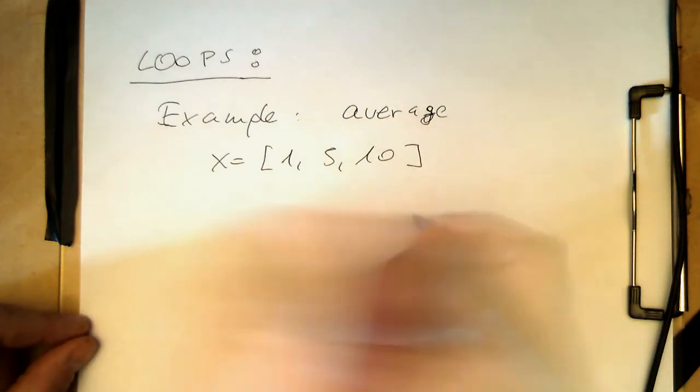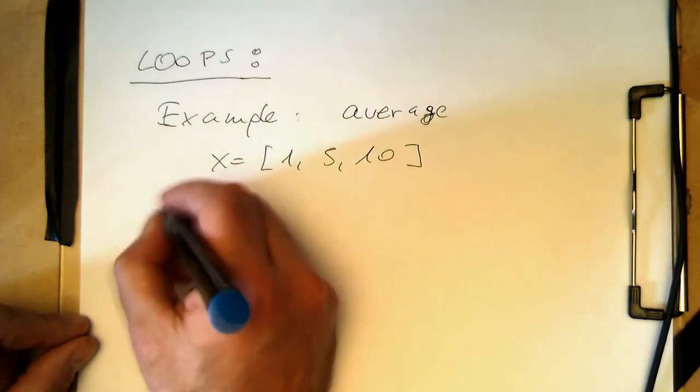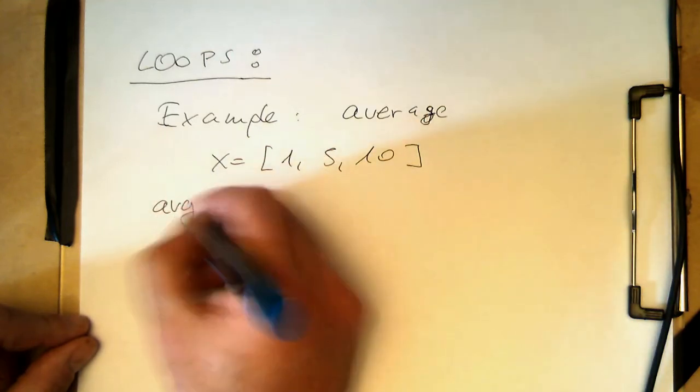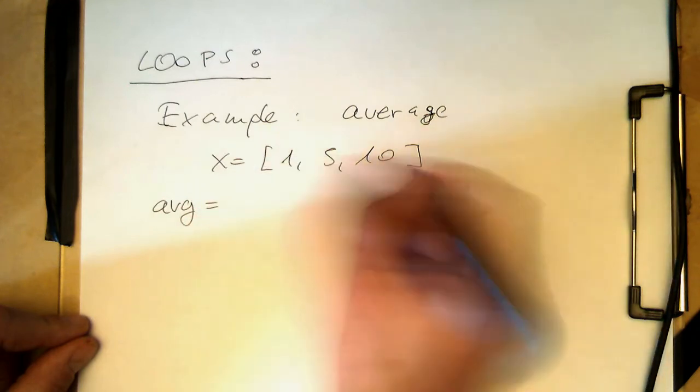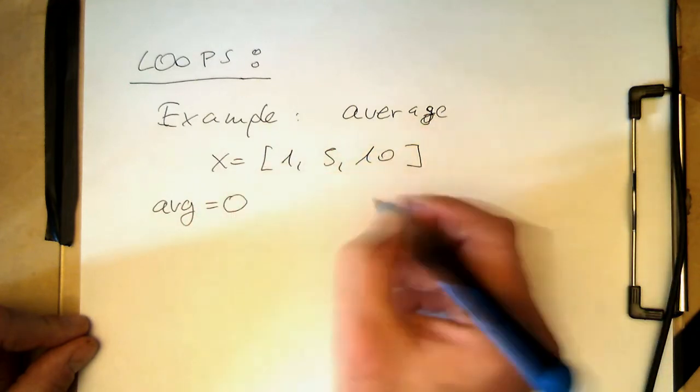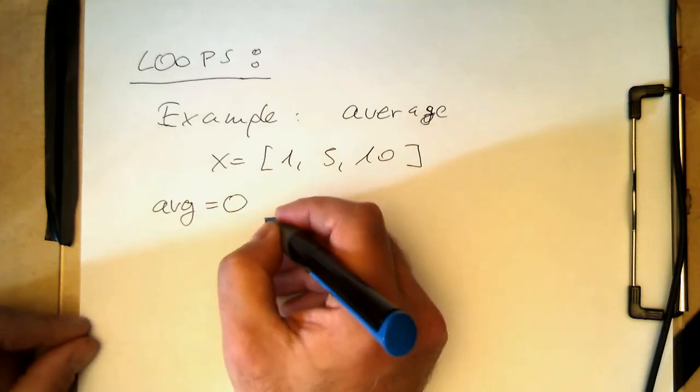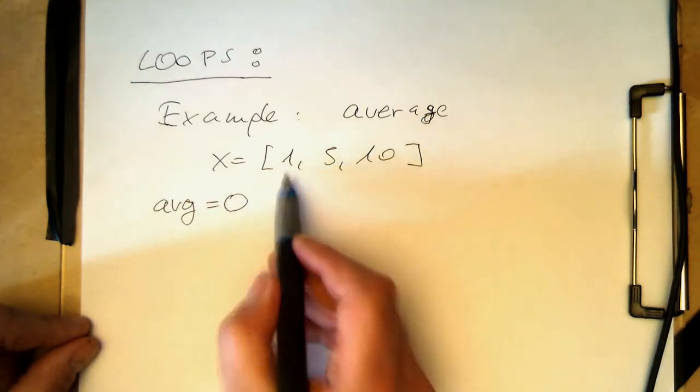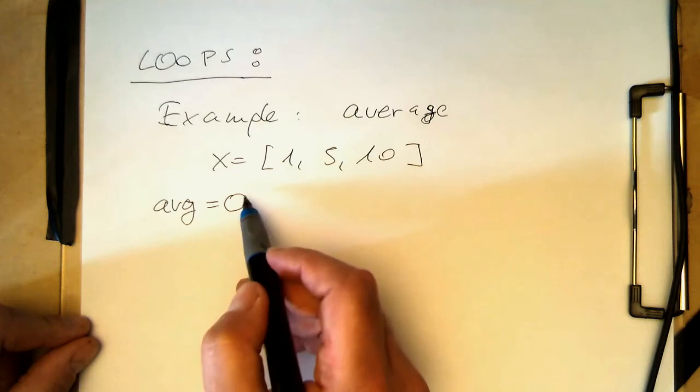So how do we do this? So we create a variable called average, where we sum up all these values here. So that's our average value at the end. We set this to 0. And now we would like to add these three values up in a loop.